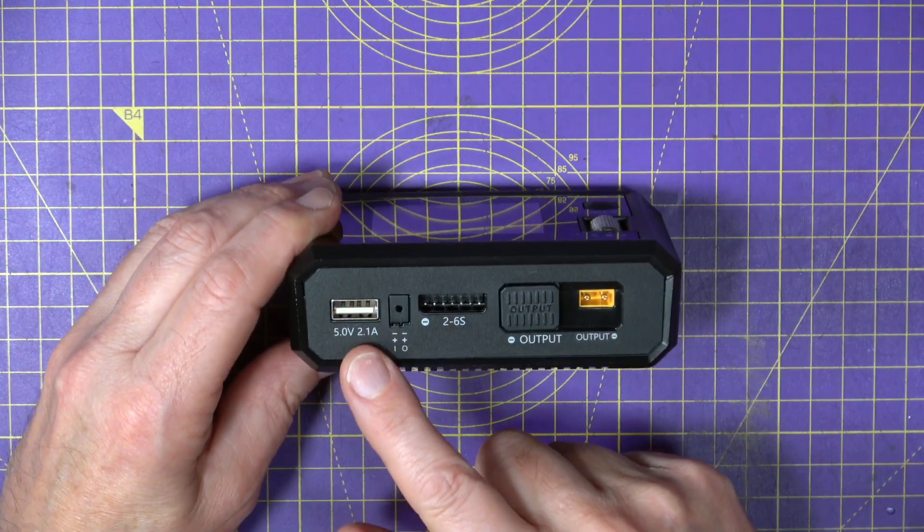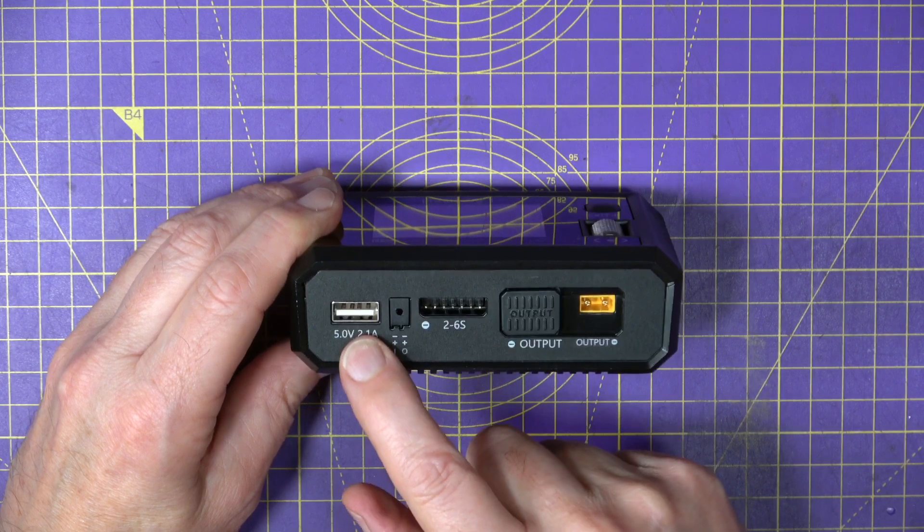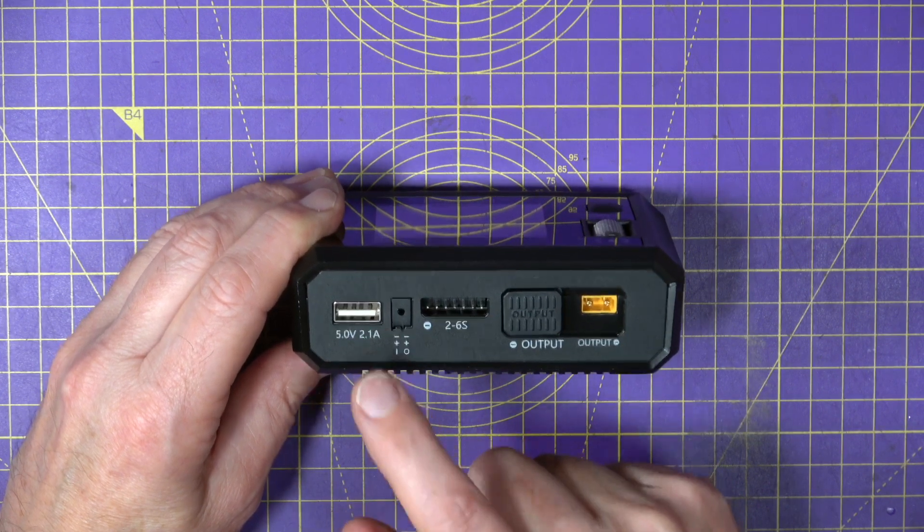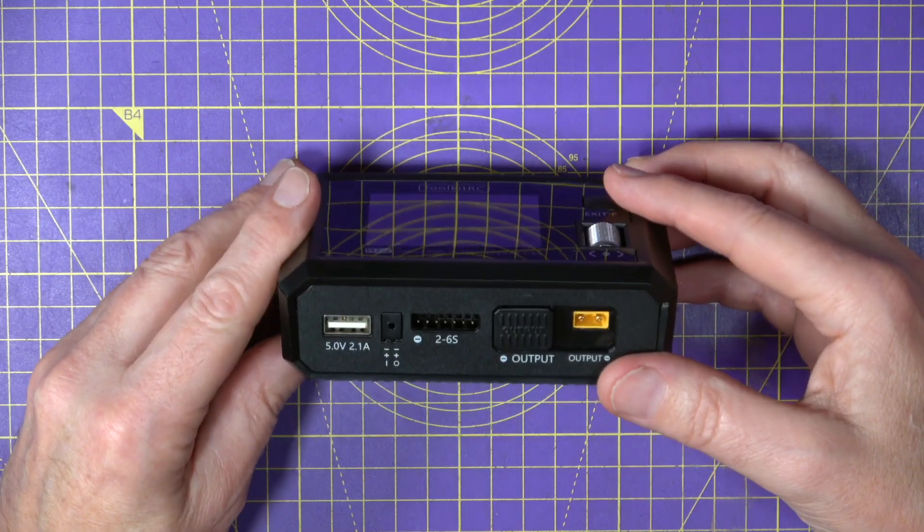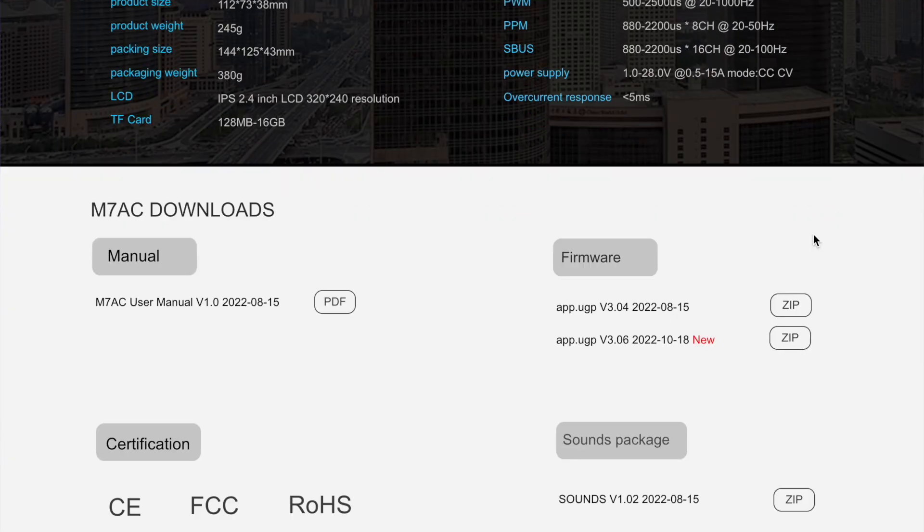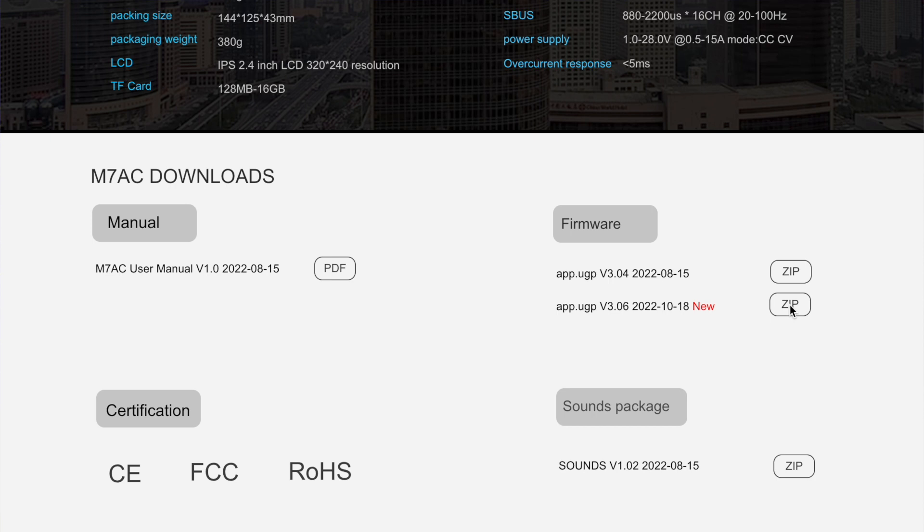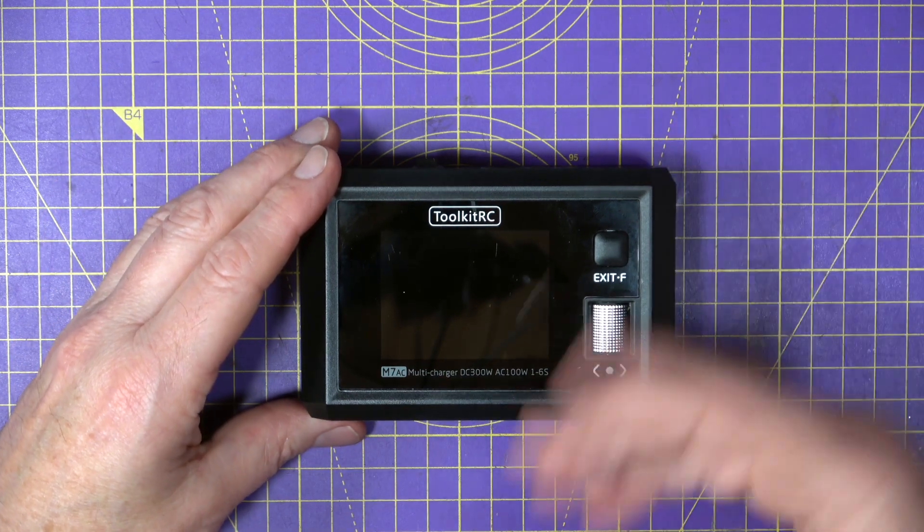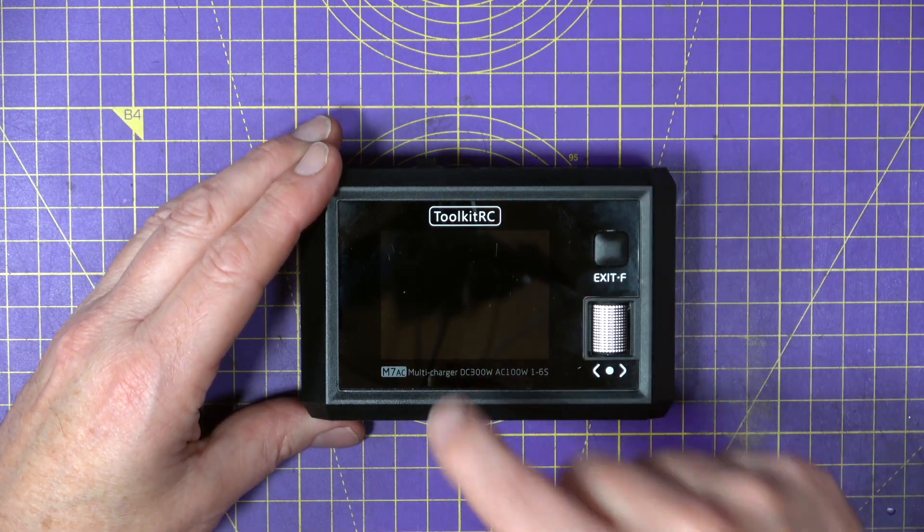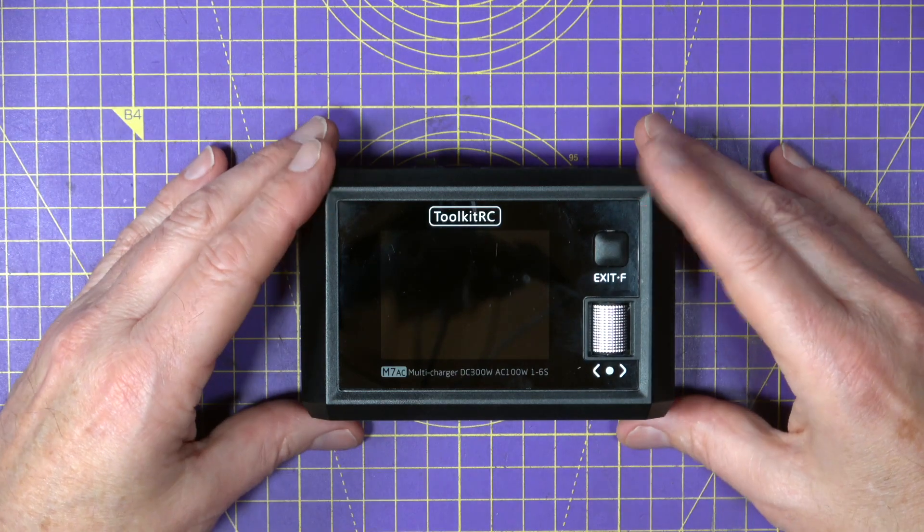On the front here there's a USB socket for either charging up USB devices or for upgrading the firmware. And like always Toolkit RC make upgrading just so ridiculously easy. You just download the upgrade from their website. Connect this to your PC with a USB cable and it appears like an external drive. And then you just drop the upgrade file onto the drive which is dead easy.